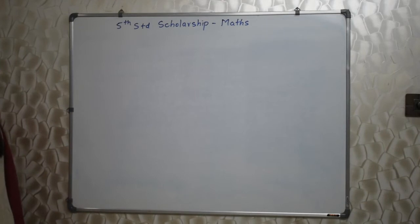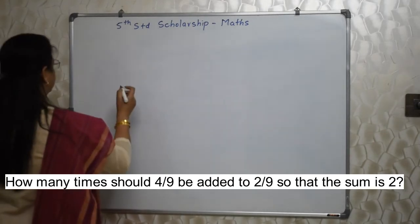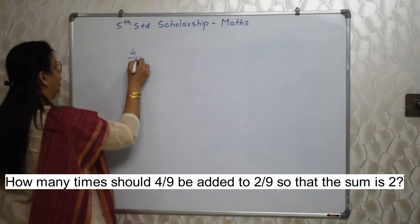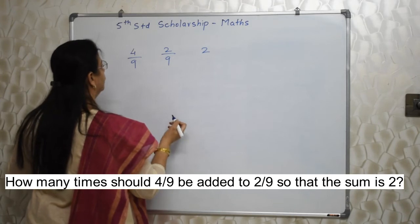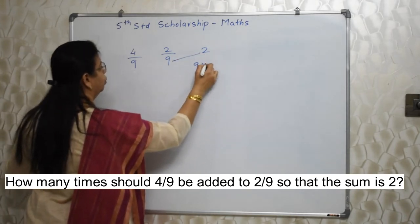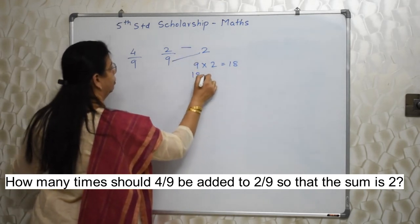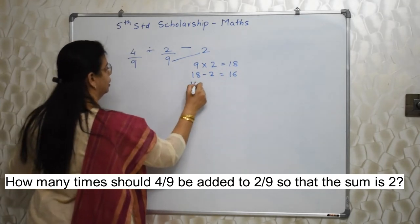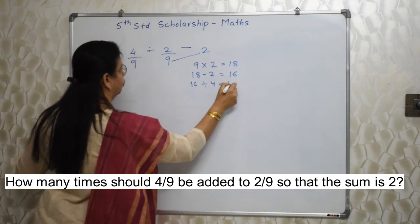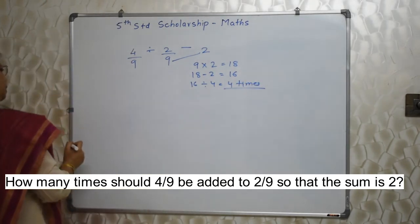How many times should 4 upon 9 be added to 2 upon 9 so that the sum is 2? I have shown a similar sum before. Write the way it is written in the sum. Start from the middle one: 9 into 2 is 18. Then do minus: 18 minus 2 is 16. Then do division: 16 divided by 4 is 4. So 4 times is the answer — within a few seconds, your answer is ready.